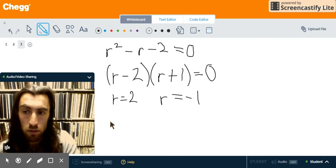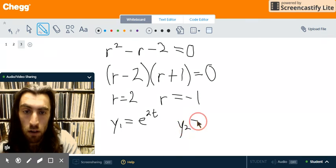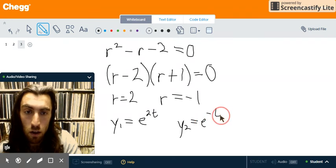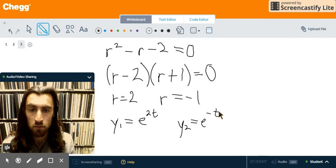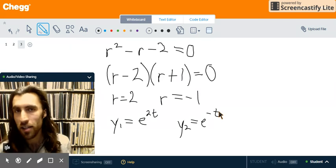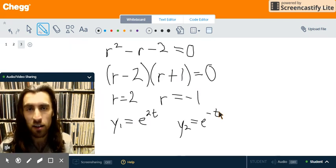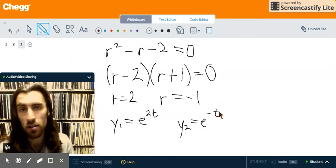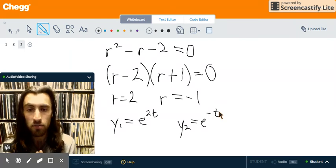One of which r equals 2 and one is r equals negative 1. Which tells us that we have two different solutions to our equation. One of which is e to the 2t and the other y2 is e to the negative t.